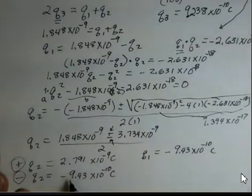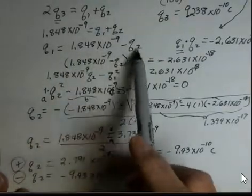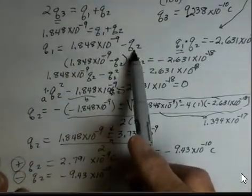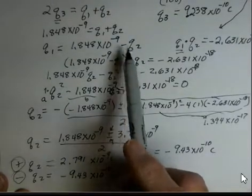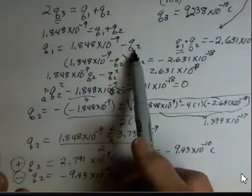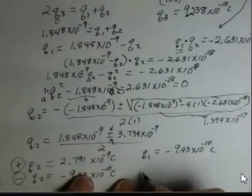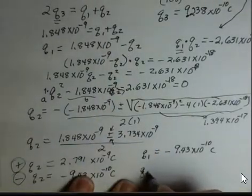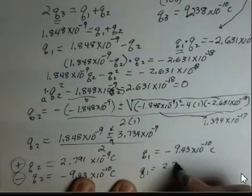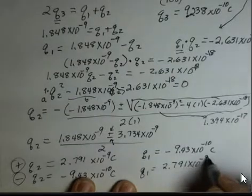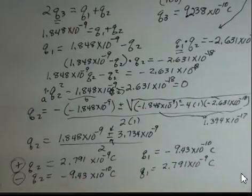And if I take this value for Q2 and I want to calculate Q1, so I replace Q2 up here with minus 9.43 times 10 to the minus 10. I'll have a minus and a minus for the Q2 number itself. And Q1 ends up being positive. 2.791 times 10 to the minus 9 coulombs. So there's our pair, Q1 and Q2.